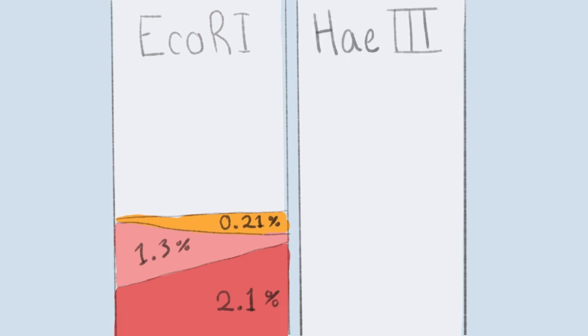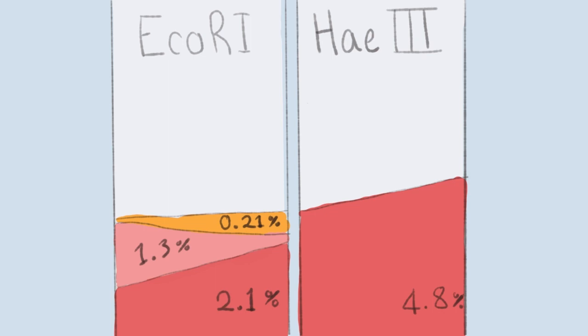Samples digested with EcoR3 lost more DNA: 4.8% during denaturing, 4.4% during neutralizing, and left 0.31% in the gel due to their smaller fragment size.